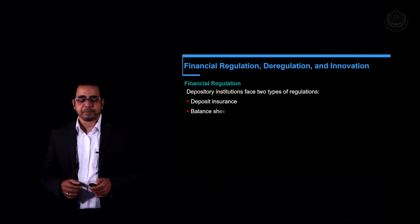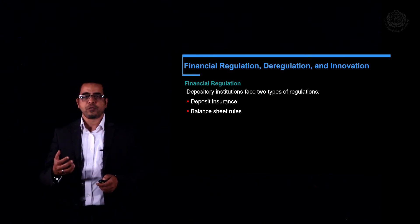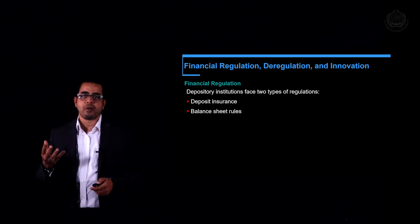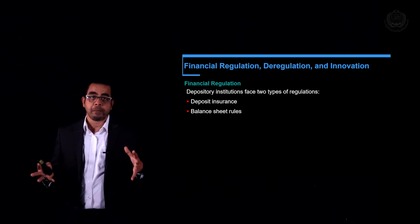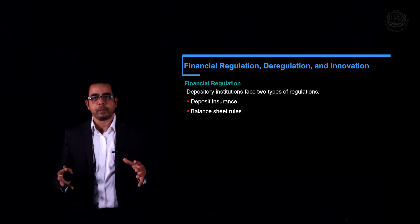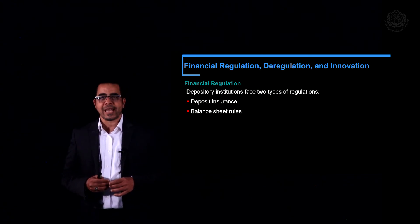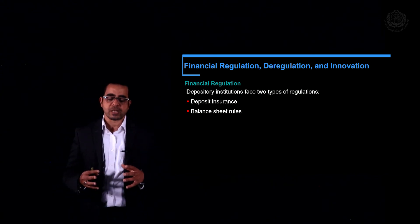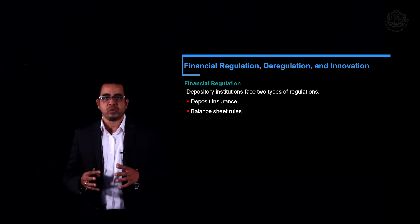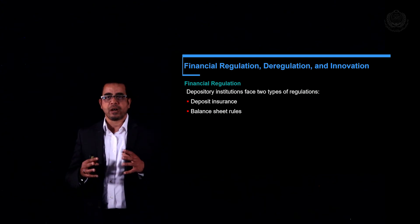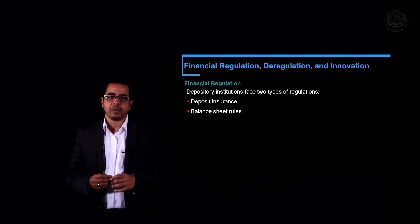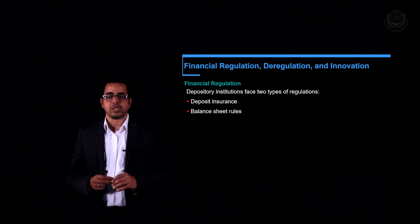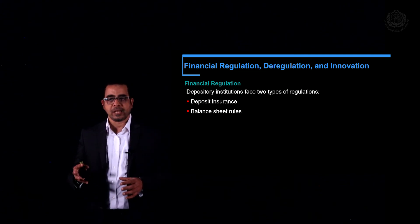Because banks work with other people's money, they must operate under heavy regulations and the control of a higher authority. In our case, that authority is the central bank. Central banks give privileges to depositors and keep banks under close oversight to guarantee they are operating prudently and not risking people's deposits. These rules fall under two categories: deposit insurance and balance sheet rules.